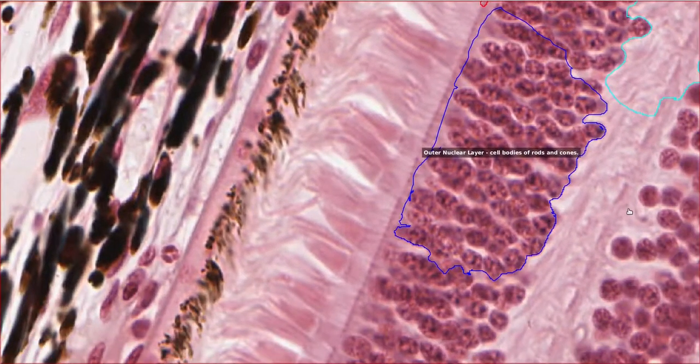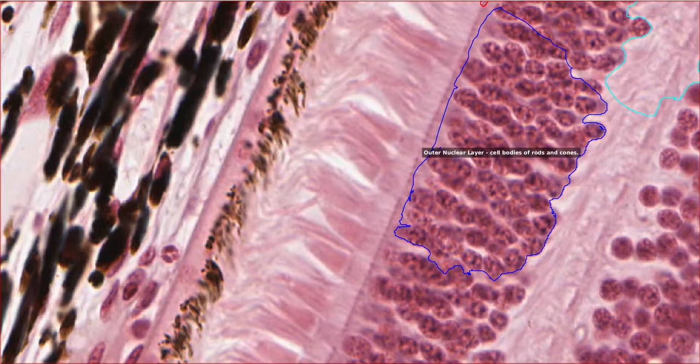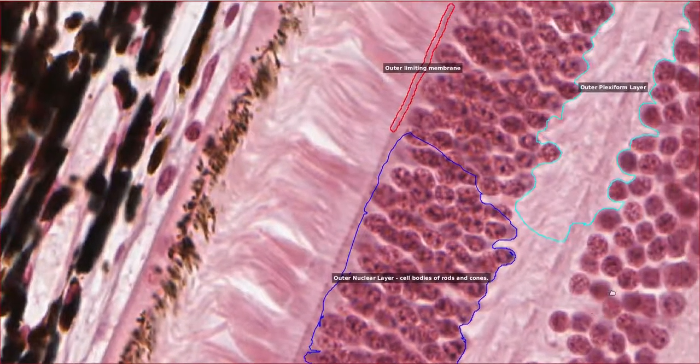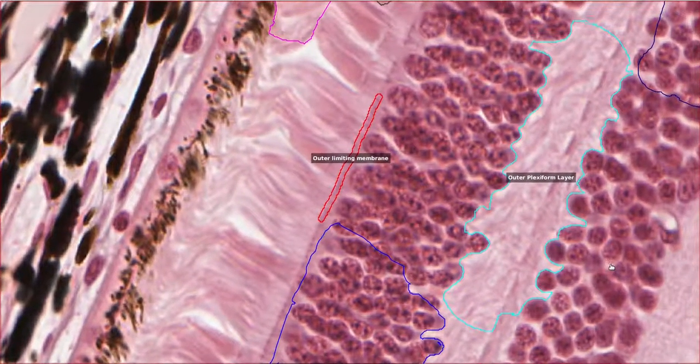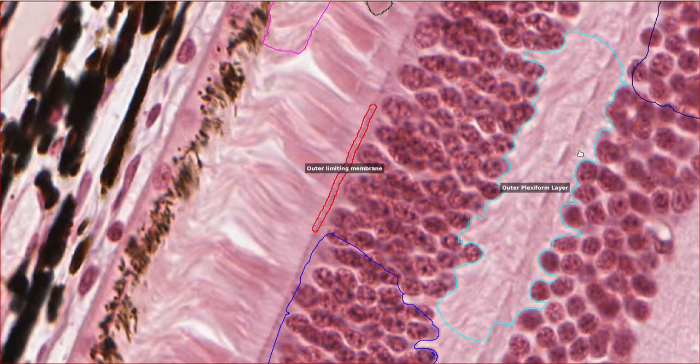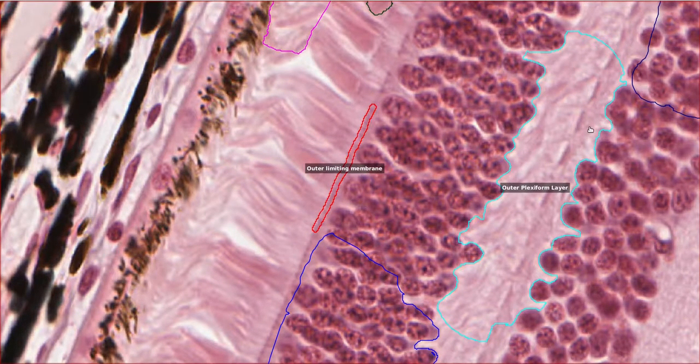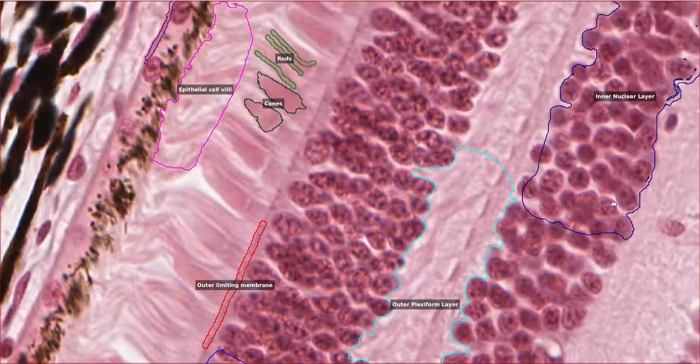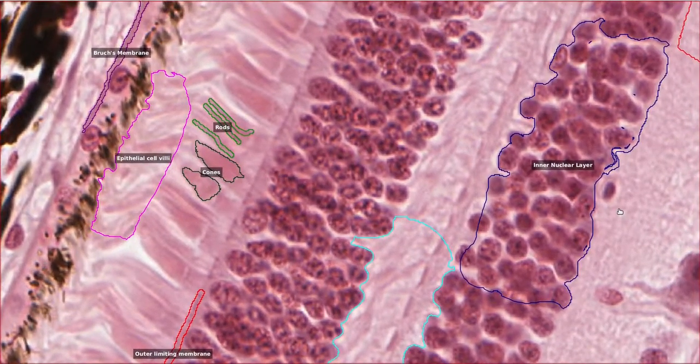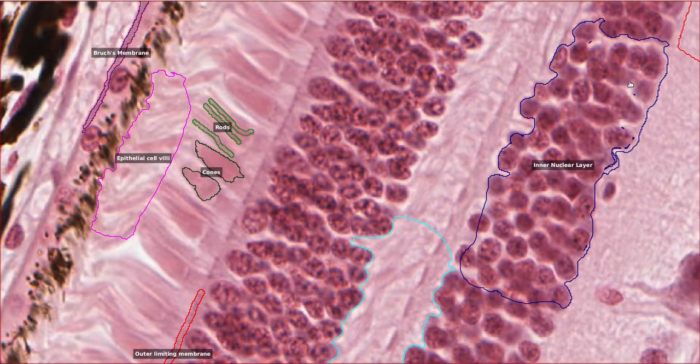The next layer up is the outer nuclear layer. This is formed of the cell bodies and nuclei of the rods, cones and Muller cells. The next layer is acellular, or well it's just without nuclei, and this is called the outer plexiform layer. These are the axons from the photoreceptor cells, which synapse with dendrites from integrating neurons. The next layer up is the inner nuclear layer. As you would expect, it contains the cell bodies of the integrating neurons that were putting their dendrites out into the outer plexiform layer.